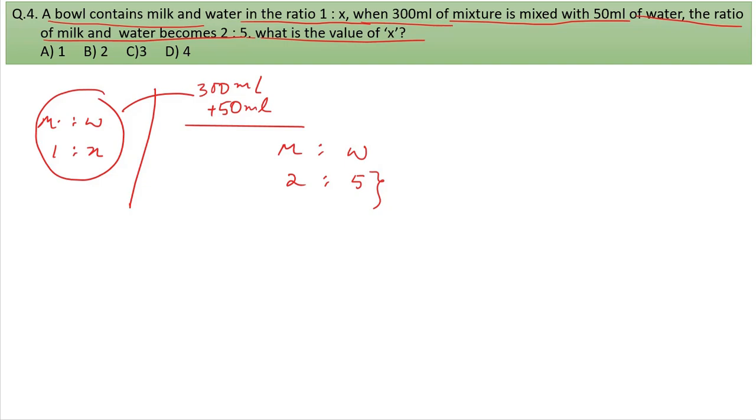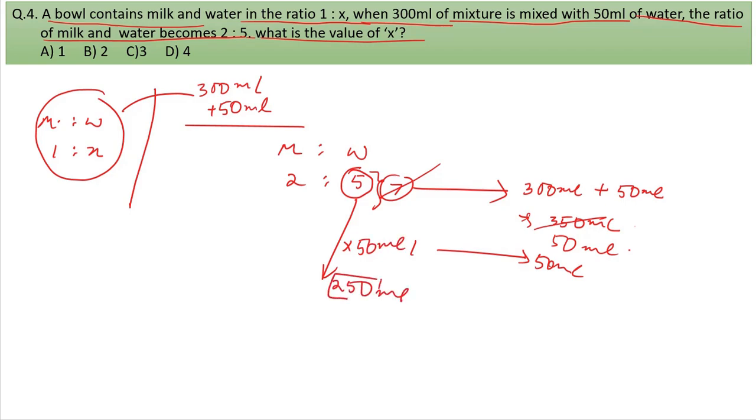We have 300 ml of mixture plus 50 ml of water, making 350 ml total. The resulting ratio is 2 to 5, which means 7 units total. So 350 ml equals 7 units, meaning one unit is 50 ml. Milk is 2 units, so 2 times 50 equals 100 ml.